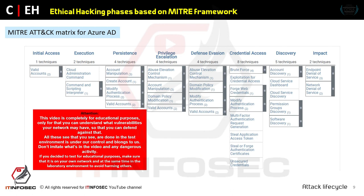The MITRE ATT&CK matrix for Azure Active Directory is also available. I recommend studying Azure and Windows operating system basics first. This matrix has some Azure-specific items but most are similar to the network or Windows OS matrices — for example, persistence is creating an account, privilege escalation is account manipulation, defense evasion is domain policy modification, and so on.